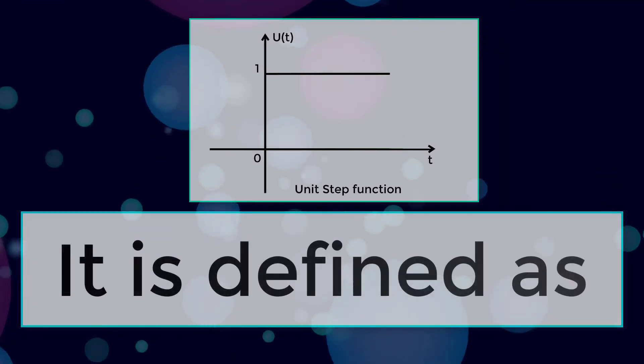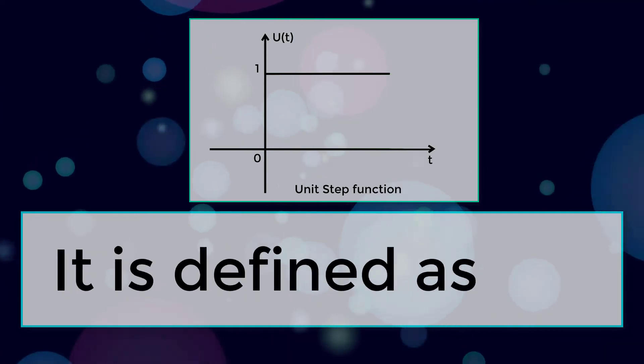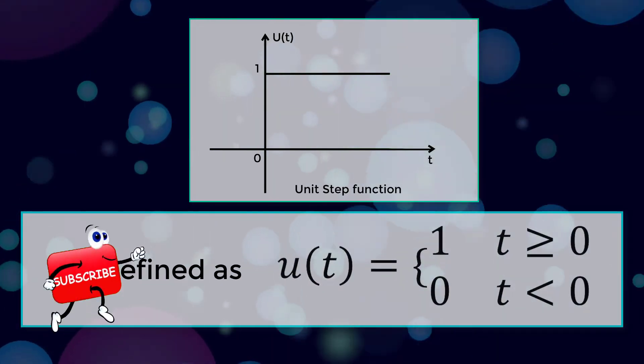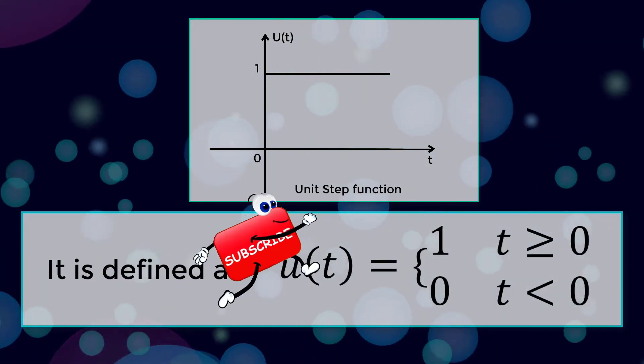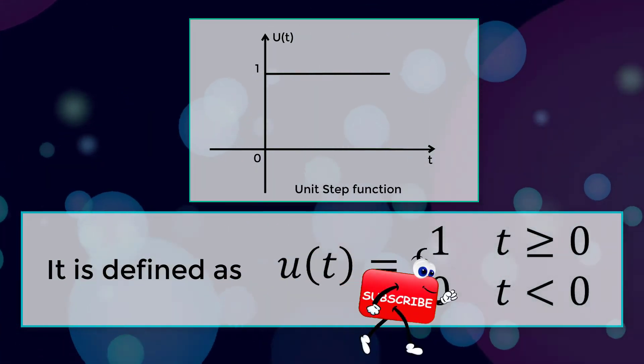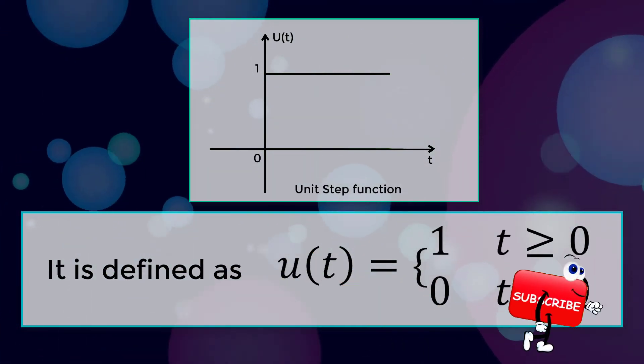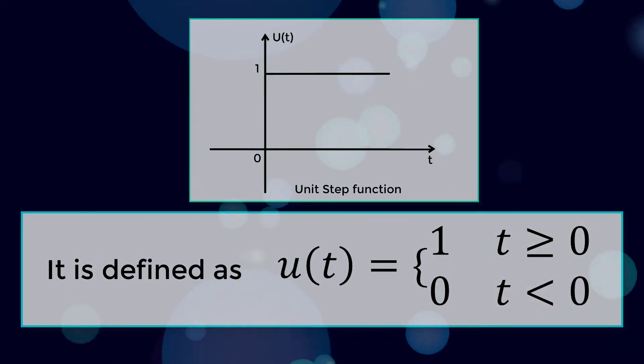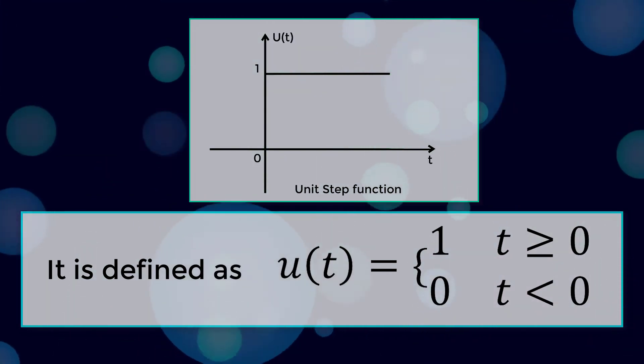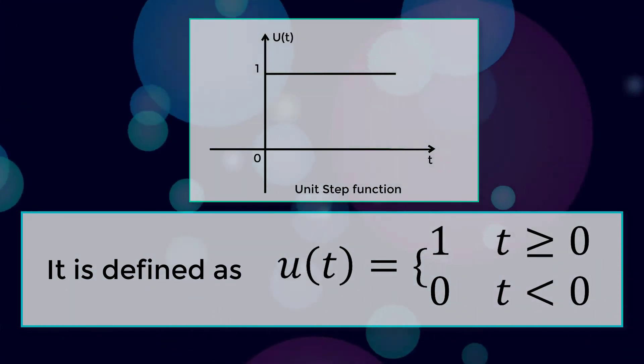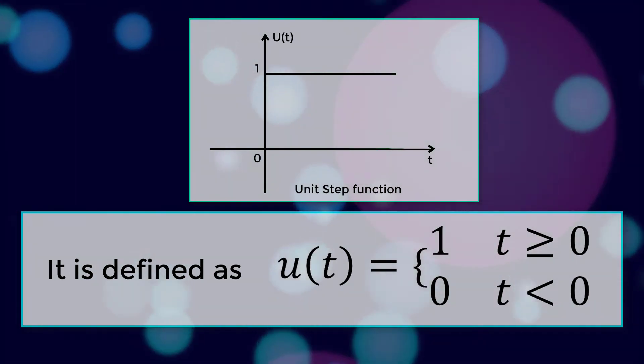It is defined as: UT equals one where t is greater than or equal to zero, and UT equals zero where t is less than zero.